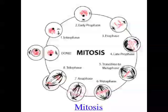The next stage, metaphase, is when the centromere — which is the middle part of a chromosome — attaches to the spindle fibers, and all of the chromosomes align in a nice straight line along the middle of the cell.